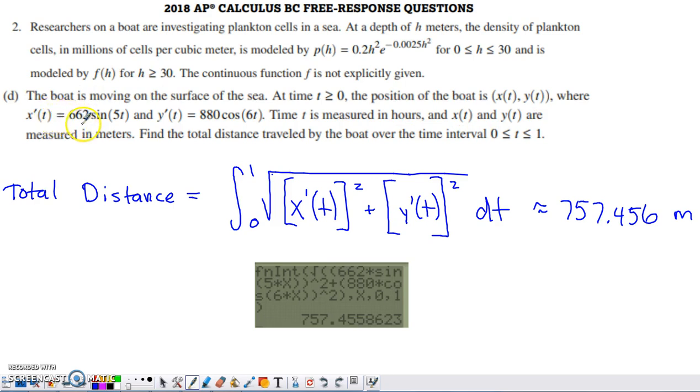They've given us the rate of change of x, and they've given us the rate of change of y with respect to t. Time is being measured in hours. x of t and y of t are measured in meters. Find the total distance traveled by the boat over the time interval 0 to 1 hour.